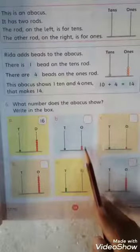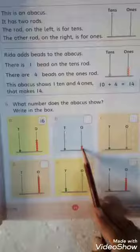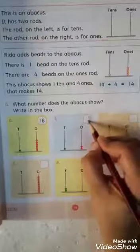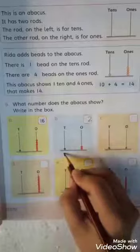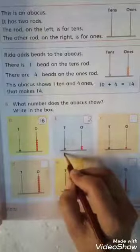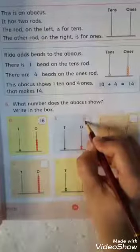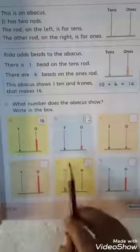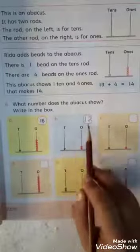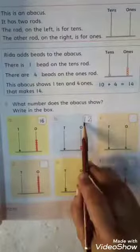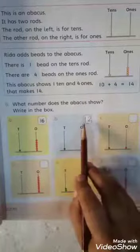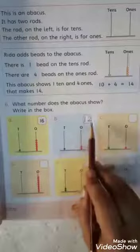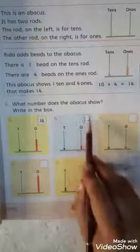In the ones column, we have two beads. So you will write the number two on your right-hand side. And in the tens column, we have one bead on the left-hand side. So you will write one at the left-hand side and two at the right-hand side — that makes it twelve.